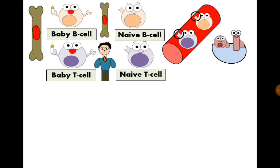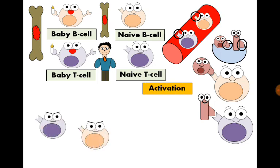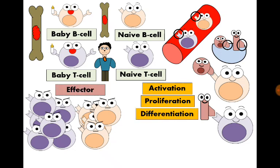One day, microbes carrying antigens specific to the receptors on the surfaces of those B and T lymphocytes entered the body and were drained to the lymph node where the lymphocytes were waiting. The B and T lymphocytes identified them and started the process of activation. First, they activated and proliferated to form a clone of identical B and T cells specific to this microbe, carrying the same receptors. Second, they differentiated into effector B cells and T cells — now they can do an effect and are no longer naive.